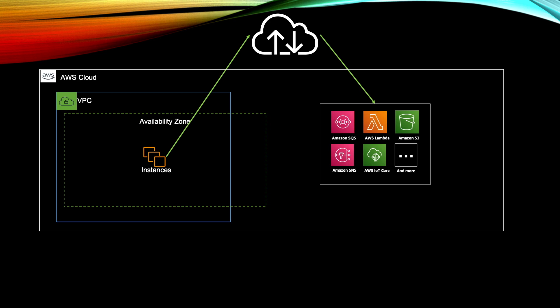Let's take an example of why we need VPC endpoints. First we'll talk about the problem — what was the problem we were having prior to the invention of VPC endpoints. Suppose you have your EC2 instance running in your VPC and these instances need to talk to any of the AWS services. It can be SQS, Lambda, S3, DynamoDB, SNS — any of these.